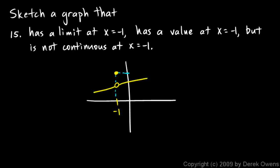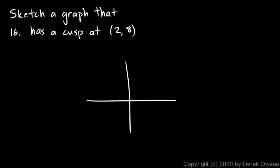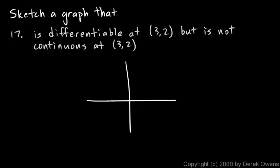Number sixteen: sketch a graph with a cusp at the point (2, 8). It just needs a cusp there — and you should understand that the graph is continuous at that point but has no derivative there. Number seventeen: sketch a graph that is differentiable at (3, 2) but not continuous at (3, 2). That is not possible. If a function is differentiable at a point, it must be continuous at that point — differentiability implies continuity. You cannot make a graph that is differentiable at a point but not continuous there.